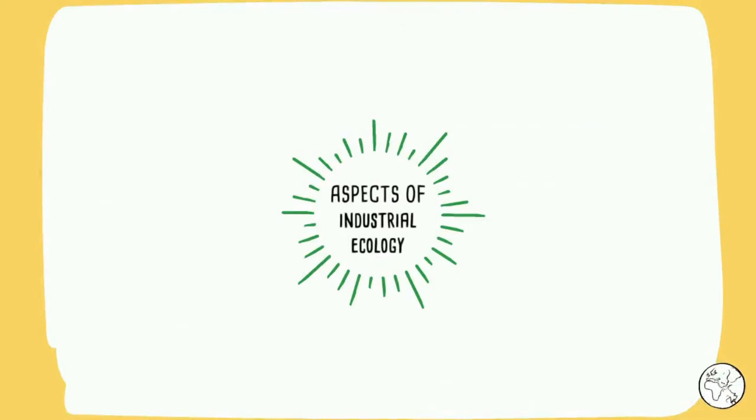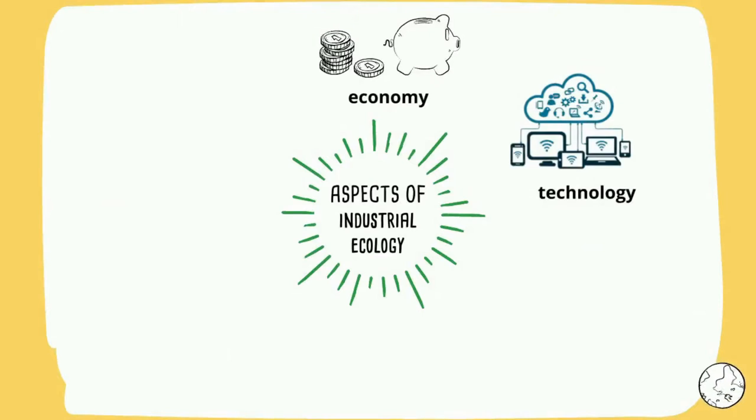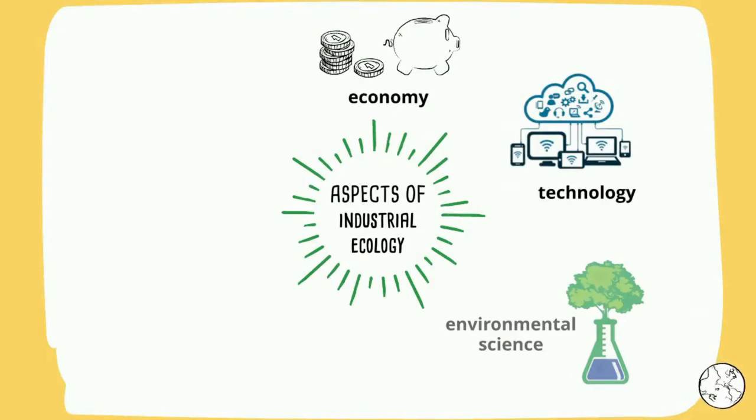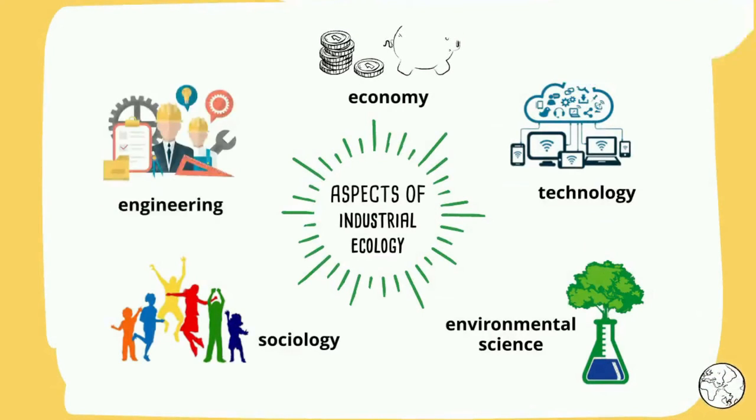There are 5 aspects of industrial ecology: economy, technology, environmental science, sociology, and engineering.